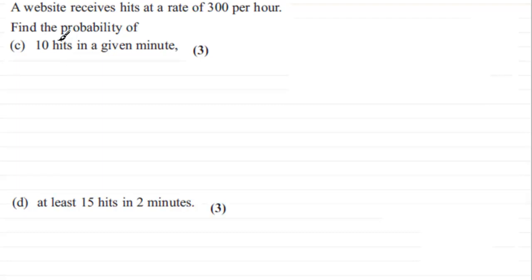Well, in this first part here, we've got to find the probability of 10 hits in a given minute. So we need to know what the mean rate of hits per minute are. We already know that there's 300 per hour. So from this, it would follow that the number of hits per minute is going to equal 300 divided by 60 for the 60 minutes per hour. So 300 divided by 60 gives us 5.